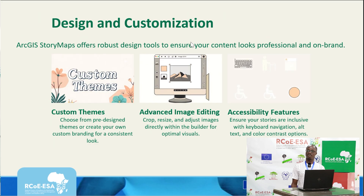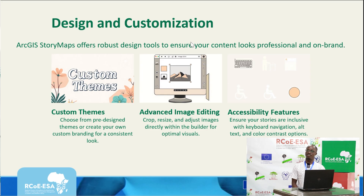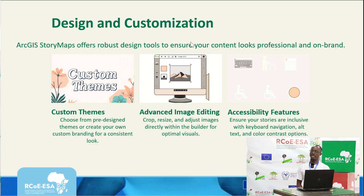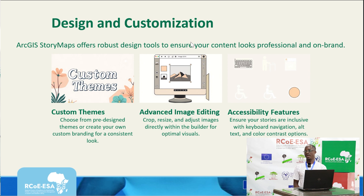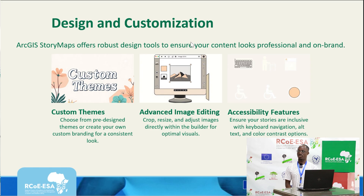Another area is design and customization. ArcGIS Story Maps offer robust design tools to ensure your content looks professional and on brand. We have customized themes — pre-designed to create your own branding for a consistent look. You can choose from pre-designed themes by Esri or create your own customized branded themes. We also have advanced image editing and accessibility features — you can crop, resize, and adjust images directly from the builder for optimal visuals, and ensure your stories are inclusive to all audiences.